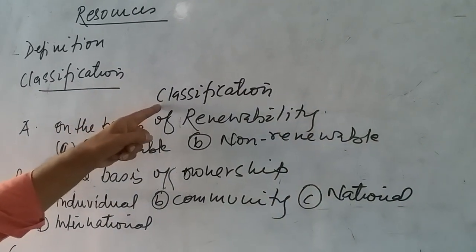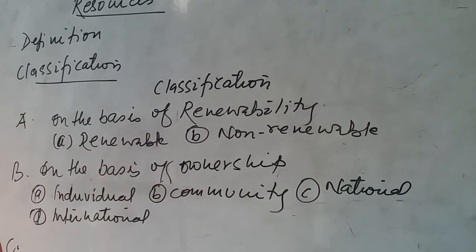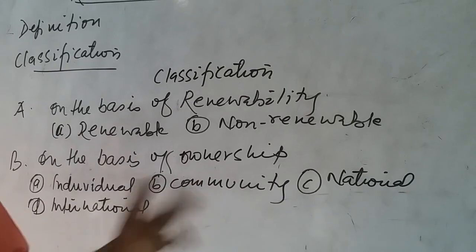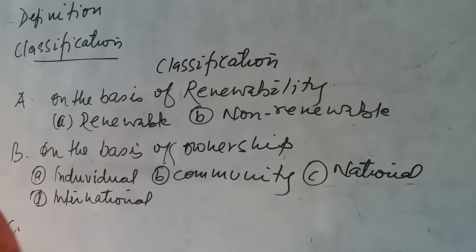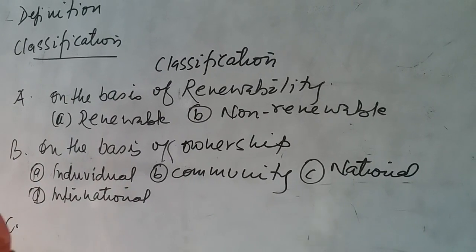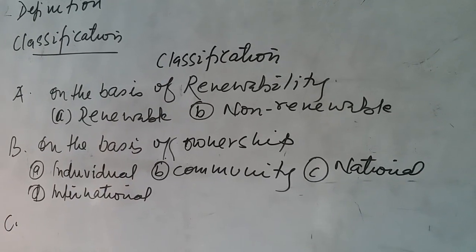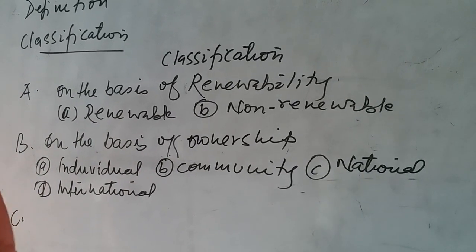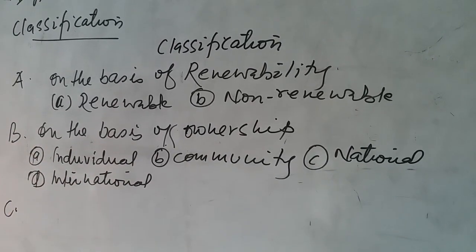To understand that classification, first we need to know the definition of resources. Resources are those things, either natural or man-made, which have the ability and capacity to satisfy human desires and human needs. These are physically and economically accessible and available for human beings. Simple definition: the things which are useful for human beings are called resources.